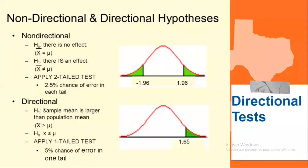Directional tests: when a research study predicts a specific direction for the treatment effect (increase or decrease), it is possible to incorporate the directional prediction into the hypothesis test — the result is called a directional test or a one-tailed test. For example, if the original population has a mean of 80 and the treatment is predicted to increase scores, then H0 would state that after treatment the mean is less than or equal to 80 (no increase). The entire critical region would be located in the right-hand tail of the distribution, because large values for M would demonstrate an increase and would tend to reject the null.